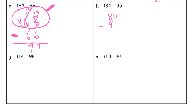184 minus 95. This is easier to do mentally, and you could just write down the answer after figuring it out mentally. But if you don't have the crutch marks up here, you didn't practice the vertical method — and that's the whole point of this homework, to practice it vertically.